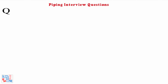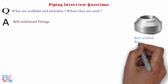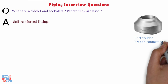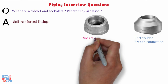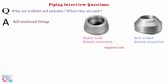Next, what are weldolets and soccolets, and where are they used? Weldolets and soccolets are self-reinforced fittings. Weldolet is for butt welded branch connection and soccolet is for socket welded branch connection, which requires a reinforcing pad and where a standard tee cannot be used because of size restrictions.